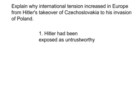The first reason I would give as to why international tension increased in Europe from Hitler's takeover of Czechoslovakia to his invasion of Poland would be that after the Czechoslovakian invasion, Hitler had been exposed as untrustworthy. Neville Chamberlain had reasoned with Hitler under the assumption that he was a normal man, but he was a ruthless dictator willing to do anything to get what he wanted. Significantly, tension increased because Britain realised it could only be firm with Hitler — so Britain's rearmament accelerated and tension increased.